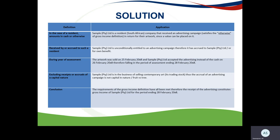Regarding 'excluding receipts or accruals of a capital nature': Sample's business is the selling of artwork, so they sold artwork as part of their trade — this will not be of a capital nature but of a revenue nature; that is their fruit. The conclusion is that all the requirements of the gross income definition have been met, and therefore the advertising campaign's value of R10,000 will be included in gross income during the current year of assessment.